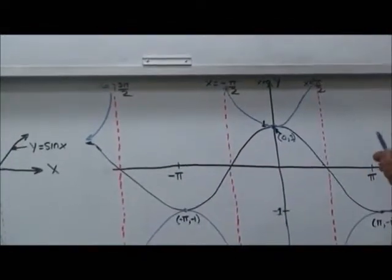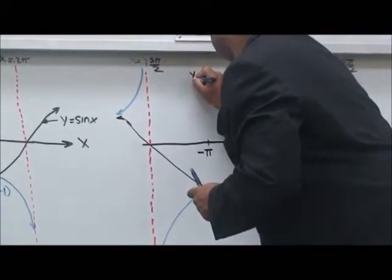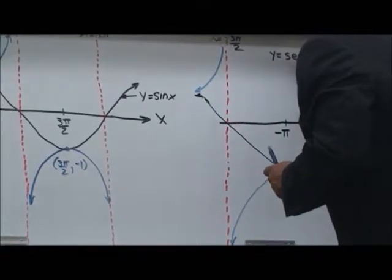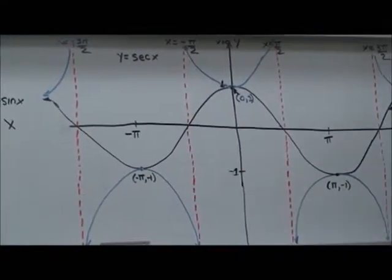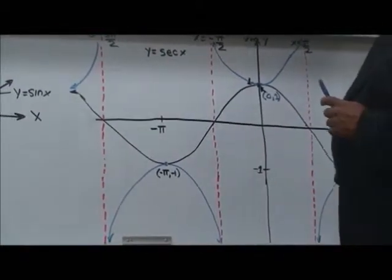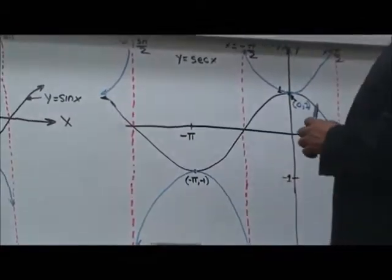And this is the y equals secant x. This is the secant. This is the secant x function here, if you see. Now, guess what? See, secant is a reciprocal identity, and it's 1 over cosine x. So, look at this. What does this look like?